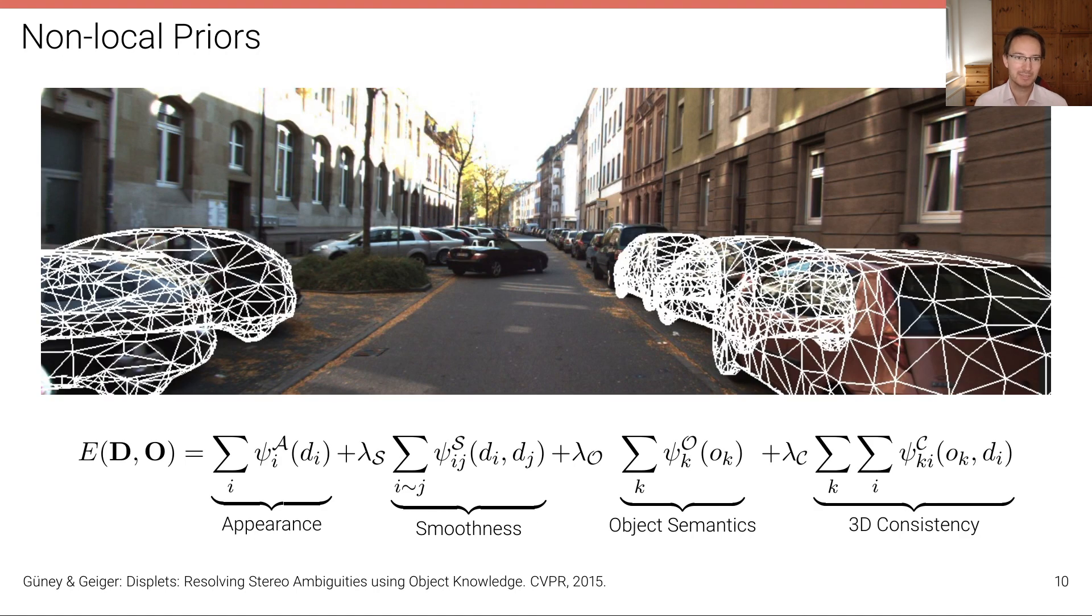And so we need stronger assumptions. We need to integrate stronger assumptions into this problem. And what we had done in this paper here at CVPR 2015 is to not only think about the scene in terms of per-pixel depth or disparities, but also in terms of the objects that are present in the scene. And because for street scenes like this, there's a lot of cars, for example, and we know what the shape of cars roughly looks like, we can try to infer not only the disparity map, but also the objects here, O, jointly.